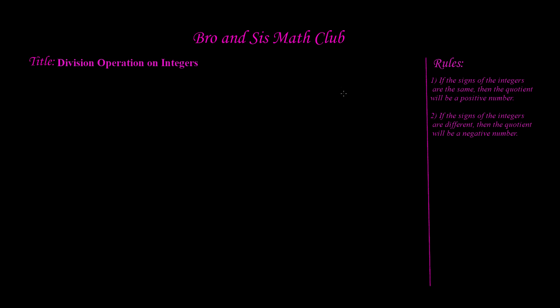This is pretty much the same concept, the same rules, except instead of multiplying, we'll be dividing. So let's go ahead and write a problem down. Let's say that we have positive 64 divided by positive 8. Now if you go ahead and look at rule number 1, it says if the signs of the integers are the same, then the quotient will be a positive number.